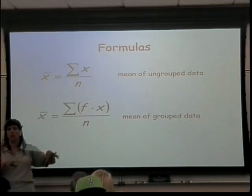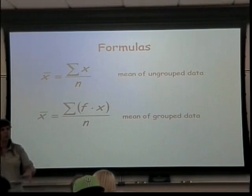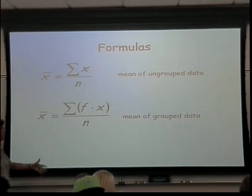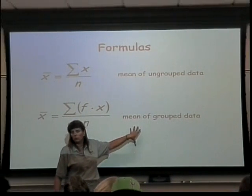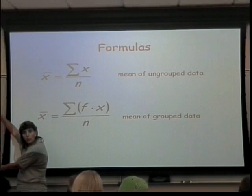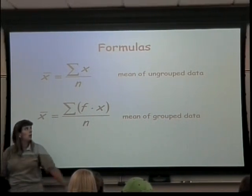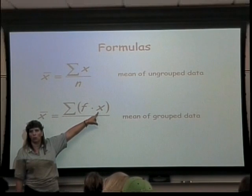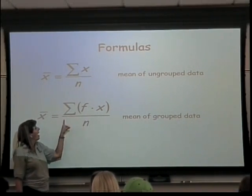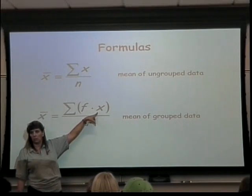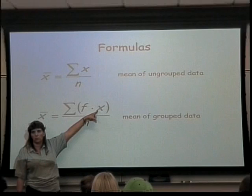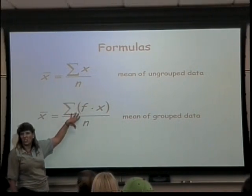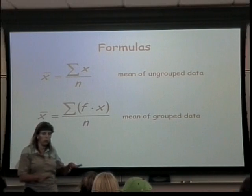This formula is if you just have individual pieces of data. To find the average age of students in this class, I'd just take each age, add them all together, and divide by the 38 people in the class. If instead I have grouped data — like a frequency table or distribution — then the average can be found by taking the frequency times the midpoint for each group, adding all of those products together, and dividing by the total number of people. This will make more sense when we do an example with grouped data.